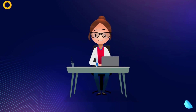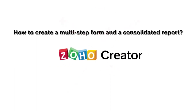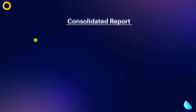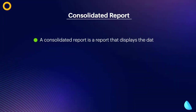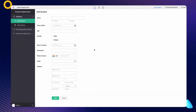Hello everyone. In this video we'll learn how to create a multi-step form and a consolidated report. A consolidated report is a report that displays the data from all the forms in a single view. This can be useful when you need to collect data from different forms and want to see all the data in a single report. In this demonstration we'll create a multi-step student registration form and a consolidated report.